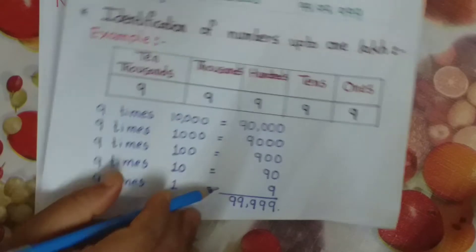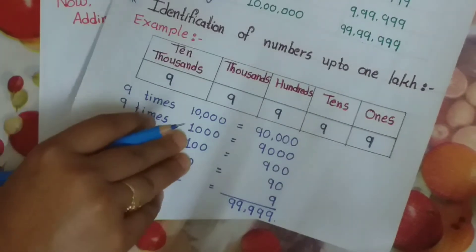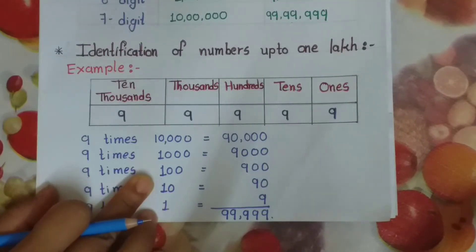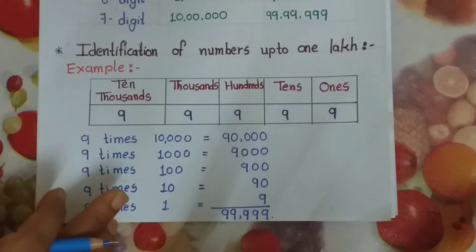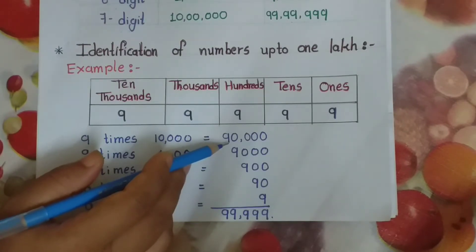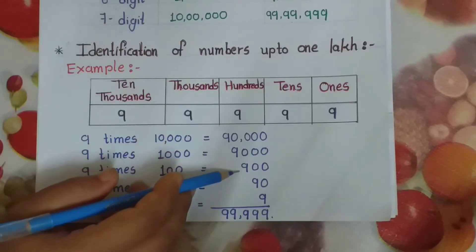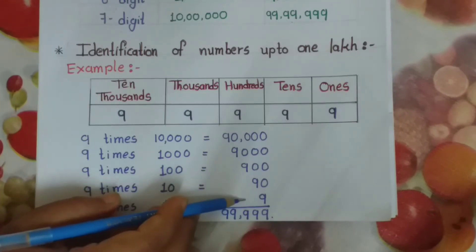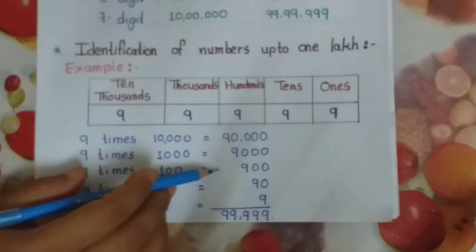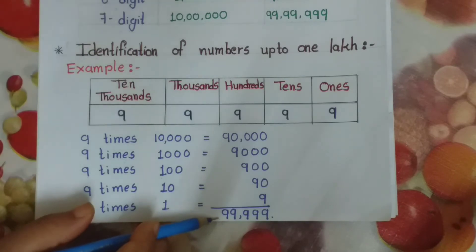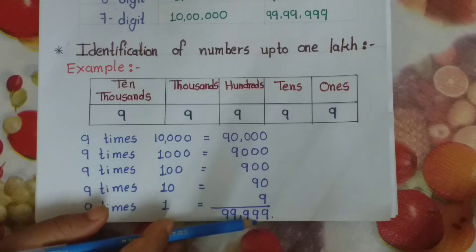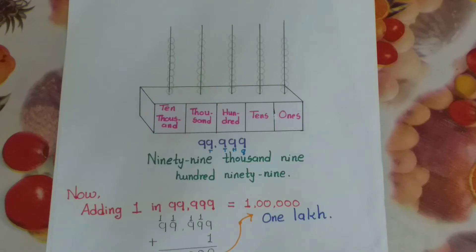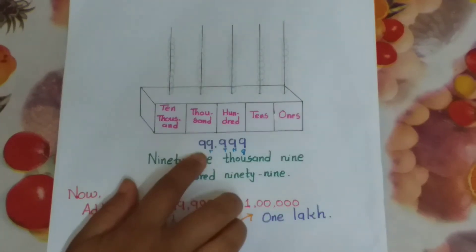9 times 1 means 9. Now if we do the addition: 90,000 plus 9,000 plus 900 plus 90 plus 9, then we get the answer 99,999.